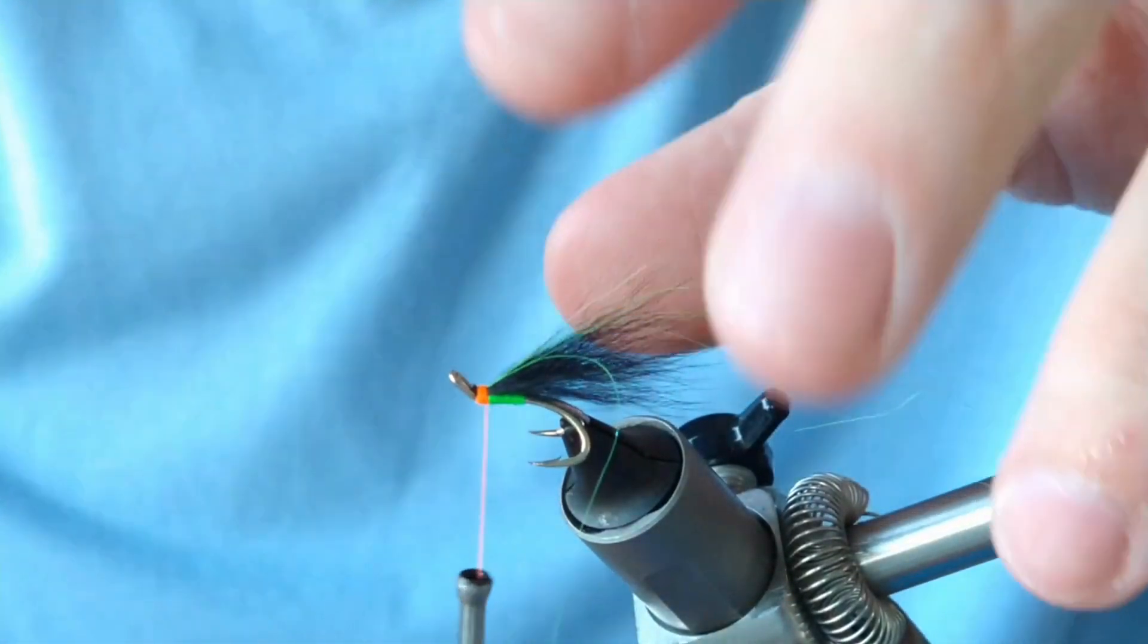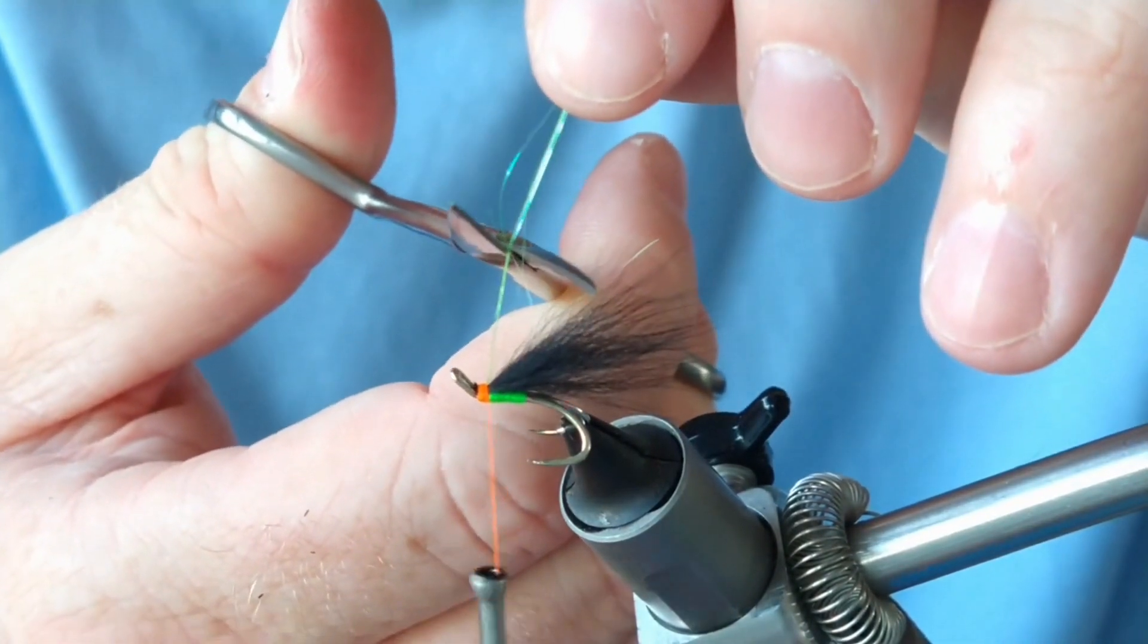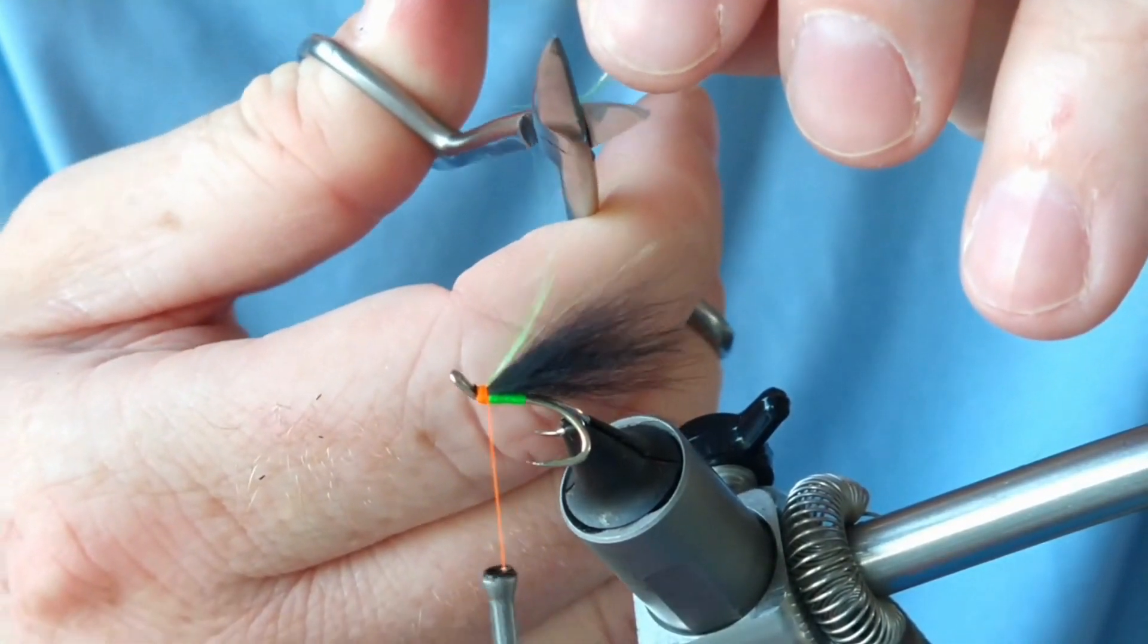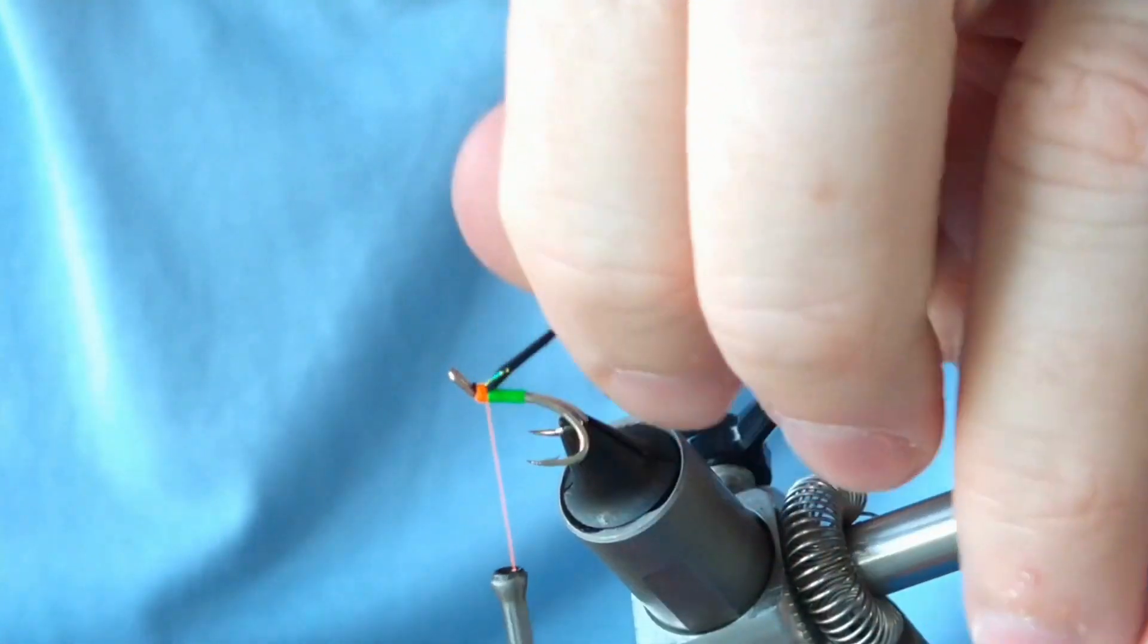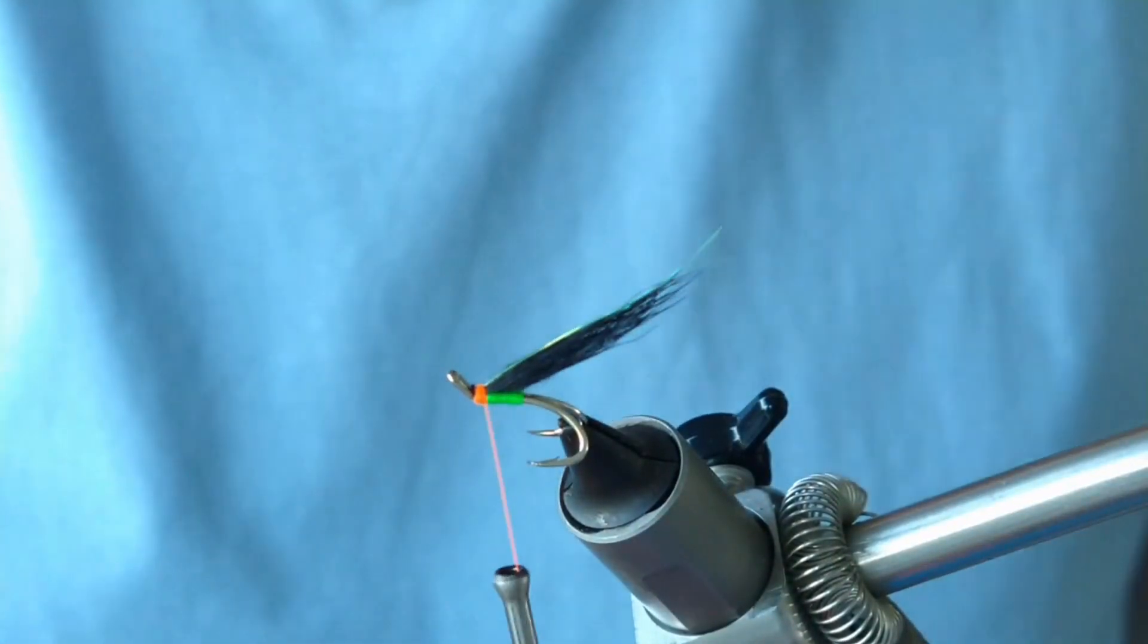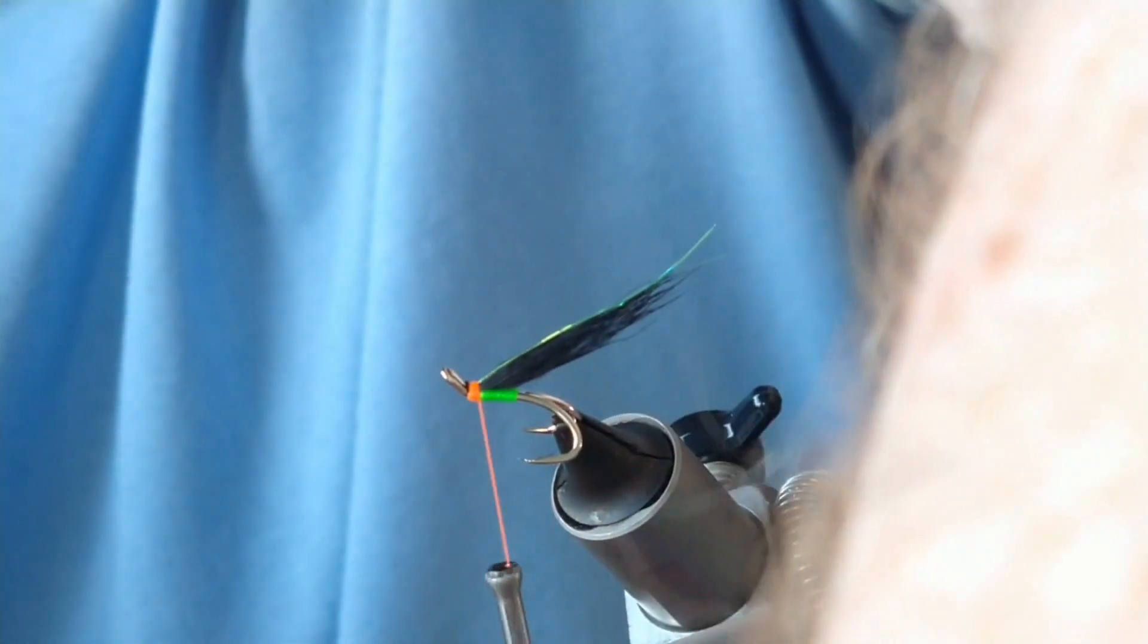I'm going to cut out different lengths so I'll run my blades along it and I'll give it a nice taper to the flash. Hopefully they're about the same length as the tail there, or the wing. Perfect.